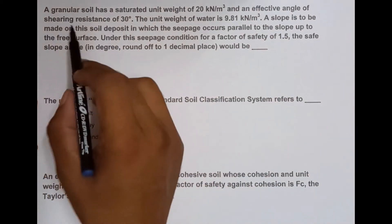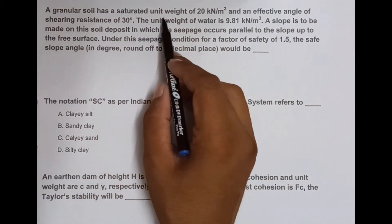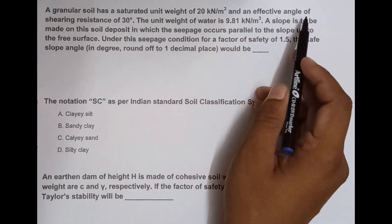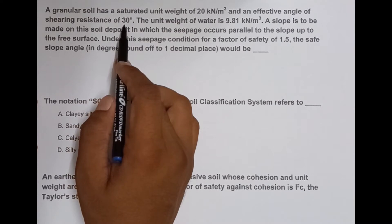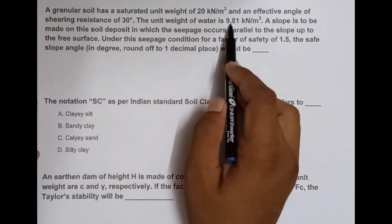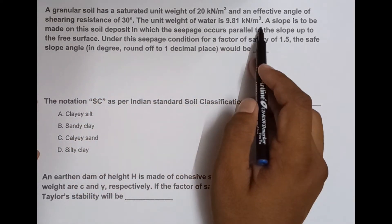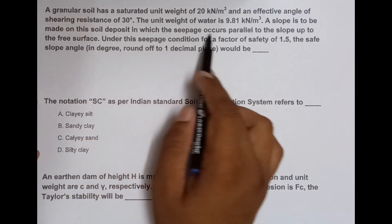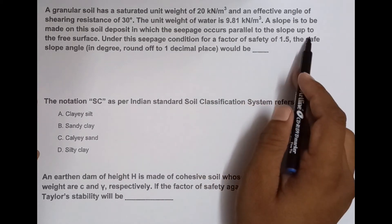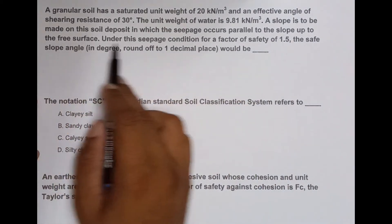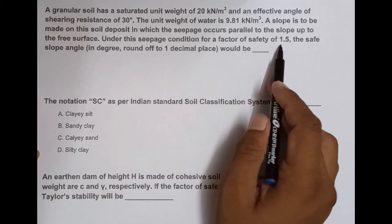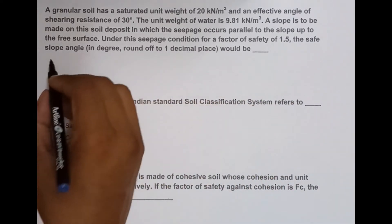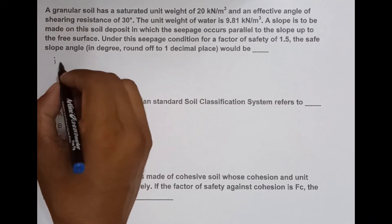Hello friends, today we're going to see the problem: A granular soil has a saturated unit weight of 20 kN/m³ and an effective angle of shearing resistance of φ = 30°. The unit weight of water is 9.81 kN/m³. A slope is to be made on this soil deposit in which the seepage occurs parallel to the slope up to the free surface. Under this seepage condition for a factor of safety of 1.5, the safe slope angle...